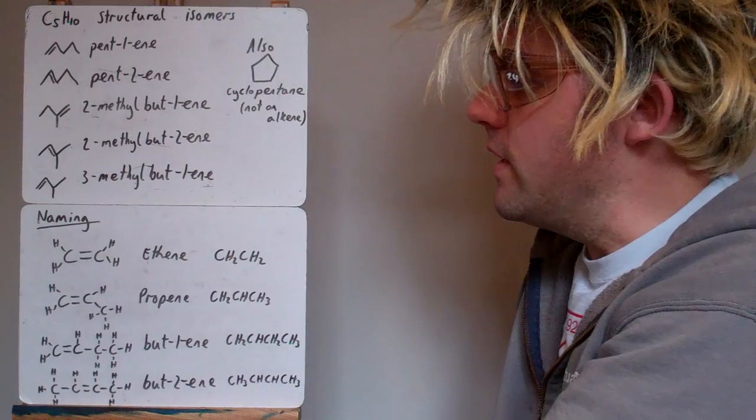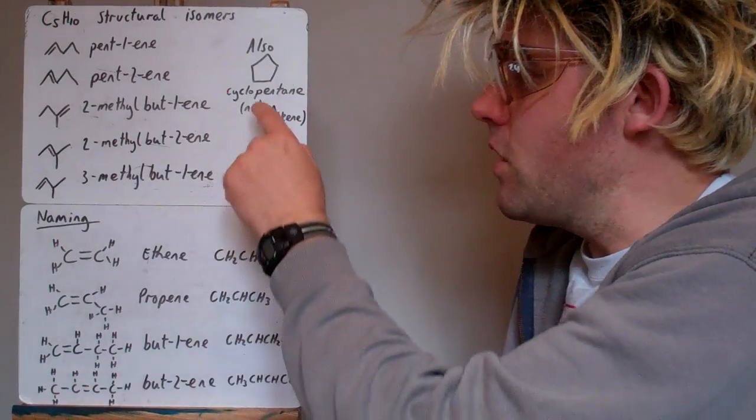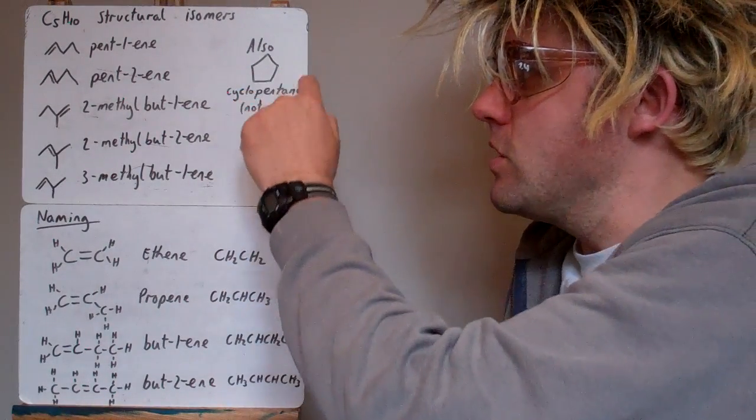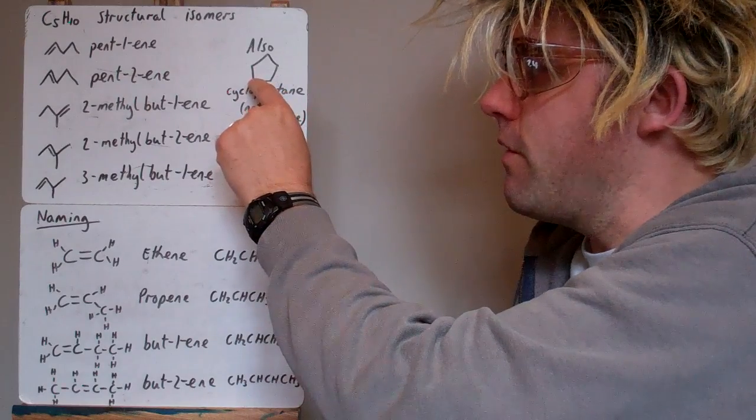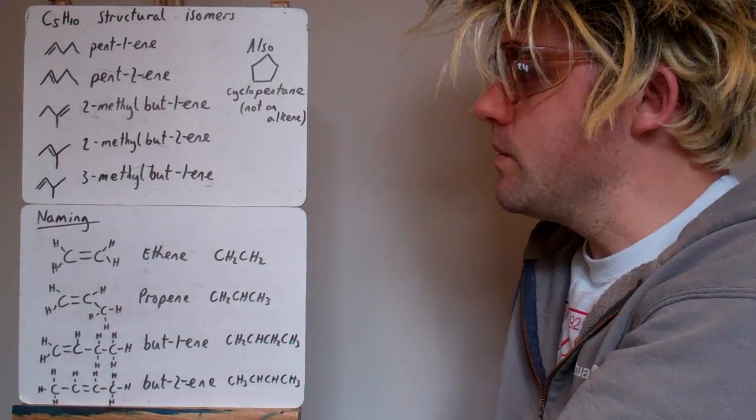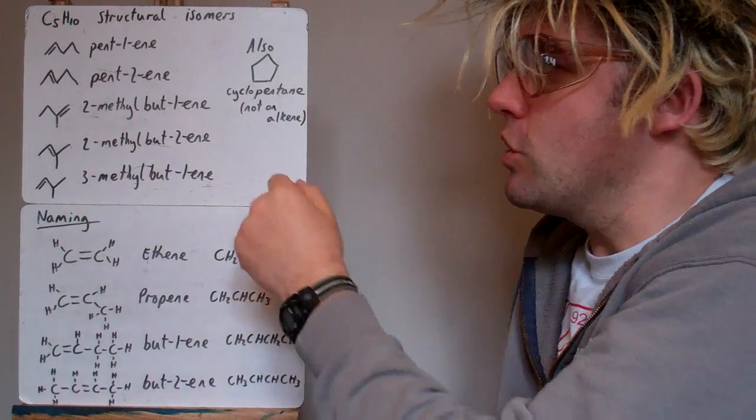Also, a structural isomer of alkenes is a cyclo version, but it's a cyclopentane because there's no double bond in there. So it's five carbons, ten hydrogens. It's not an alkene, but it is a structural isomer of these.